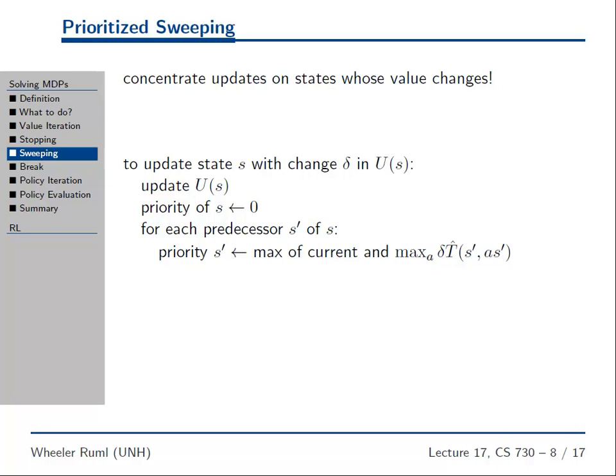Prioritized Sweeping is extremely intuitive. The Bellman updates are pulling the value function — they're regressing the value function back through the transition function. You're looking ahead one step at the rewards you'll see in the future and pulling those back to a state. We were just talking about being able to stop early if the biggest update to any value was small. Clearly, it's the states where there are big changes to the value function that we should be concentrating on.